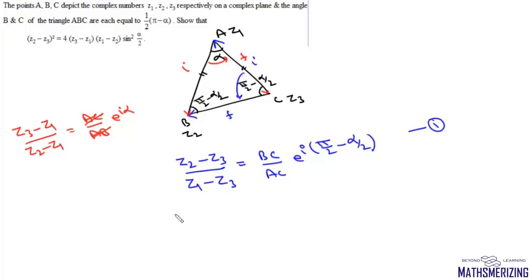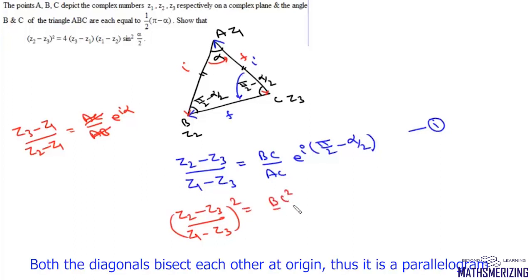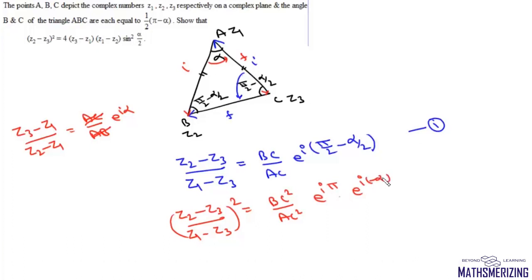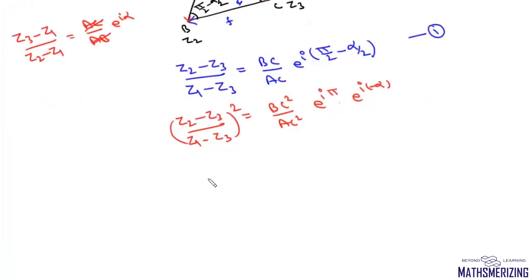We square the first result: z2 minus z3 upon z1 minus z3 whole squared equals BC squared upon AC squared times e to the power iota pi times e to the power iota minus alpha. Then we multiply the squared first result with the second result.